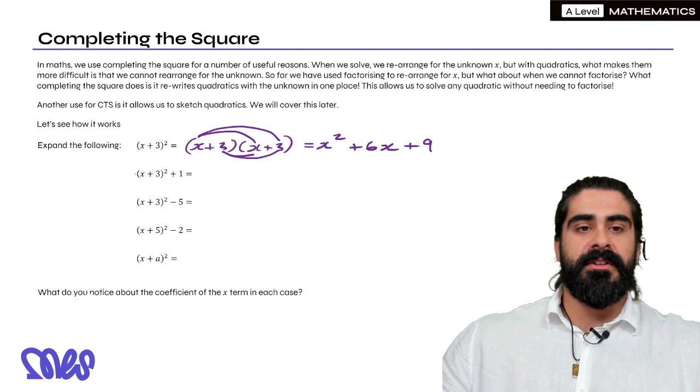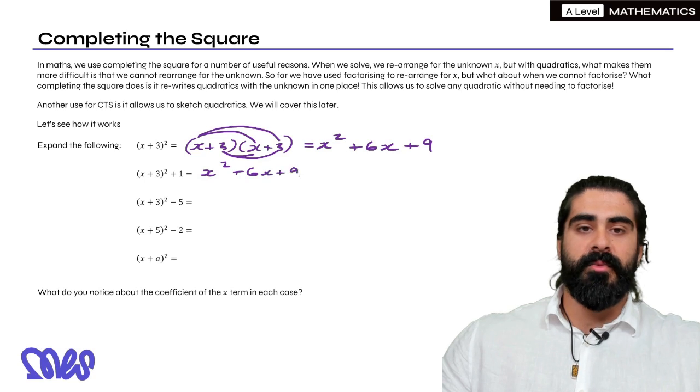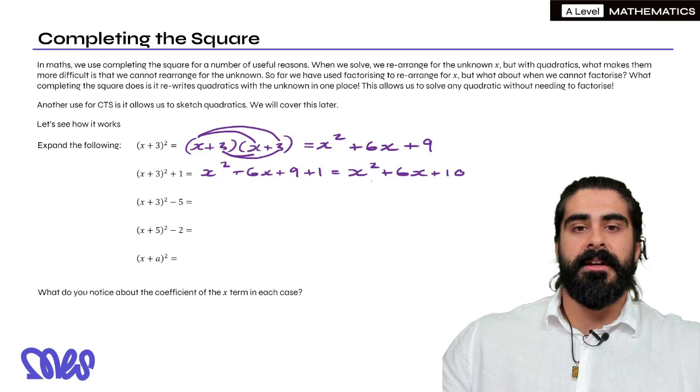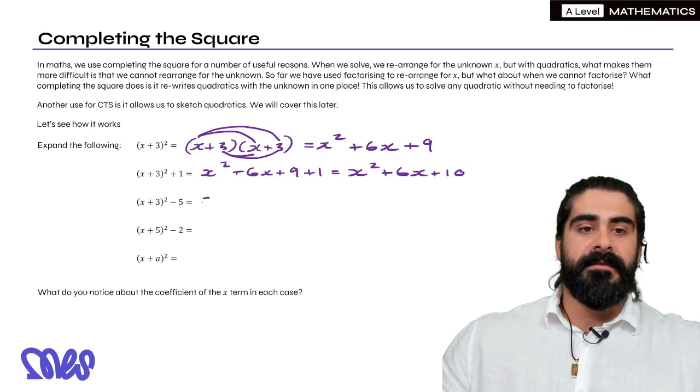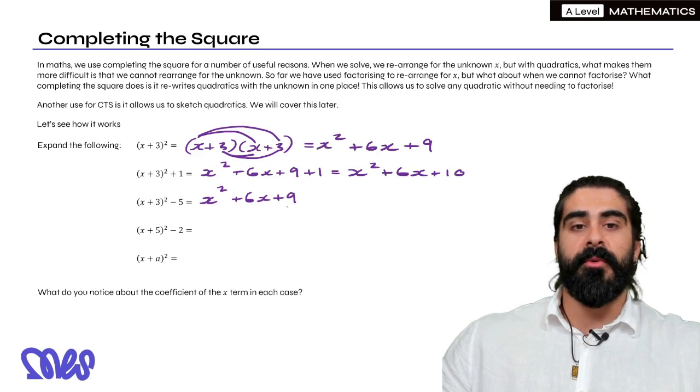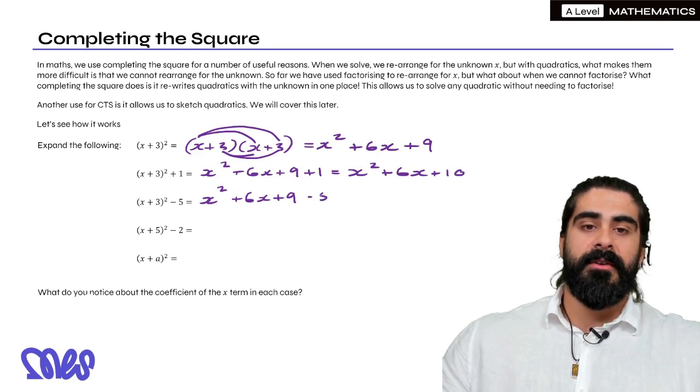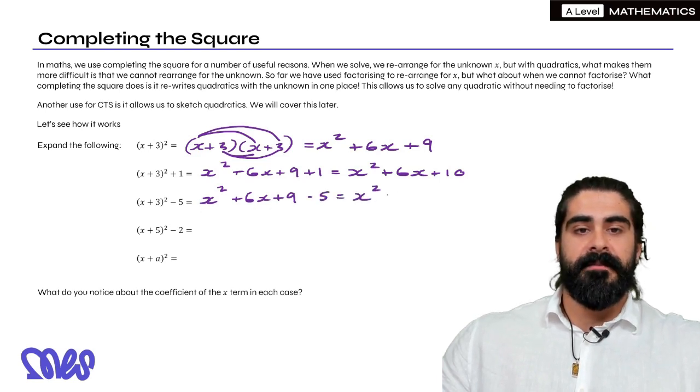If we have X plus 3 squared plus 1, then we have the exact same as the above, but then we have the plus 1 at the end, which makes it X squared plus 6X plus 10. Then if we have the minus 5, we have the exact same thing, which is going to be key in the future. So we are always going to have the exact same thing, with a minus 5 at the end. So we're left with X squared plus 6X plus 4.